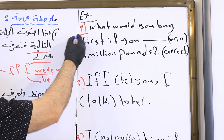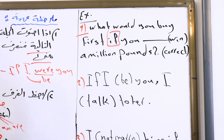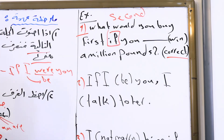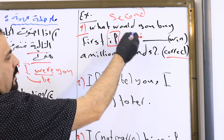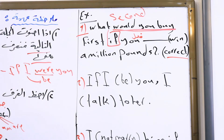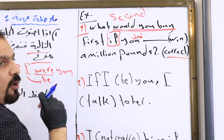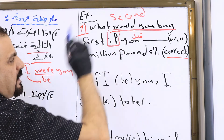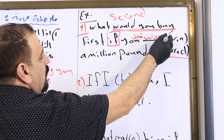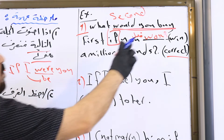Let's apply this to sentences. Example one: 'What would you buy first if you won a million pounds?' We identify this as second conditional from the word 'million'. The result clause has 'would you buy' — so the if-clause verb must be past simple. The past of 'win' is 'won'.